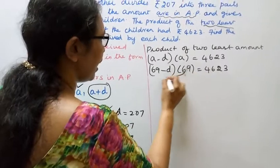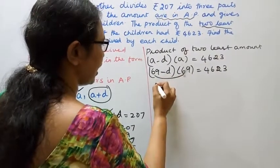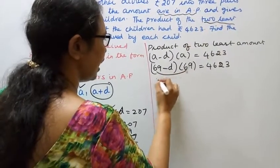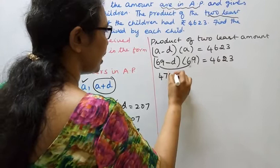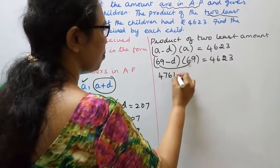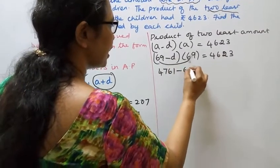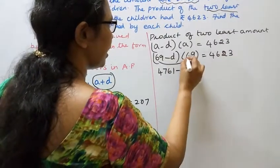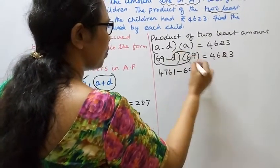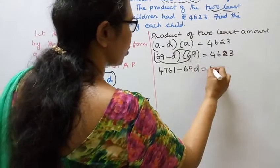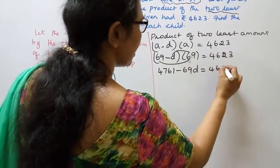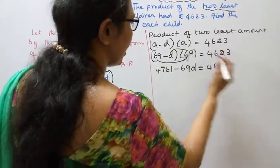69 into 69 equals 4,761. So 4,761 minus 69d equals 4,623.